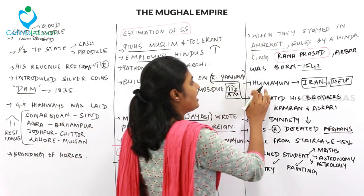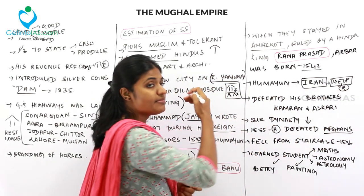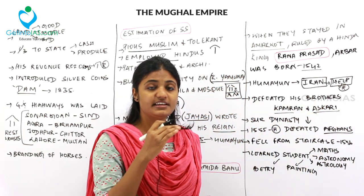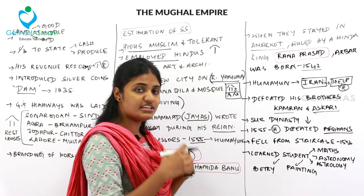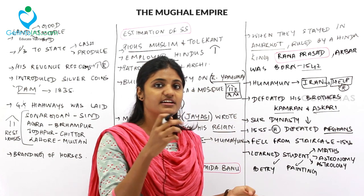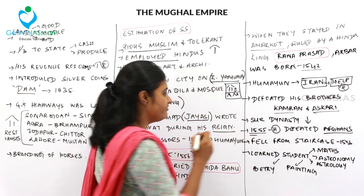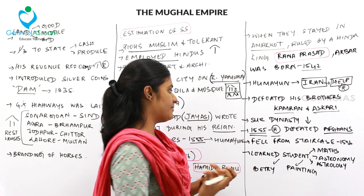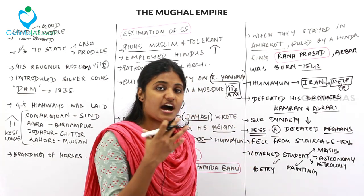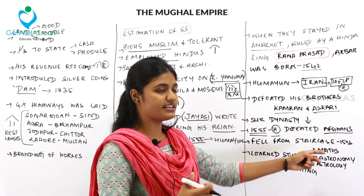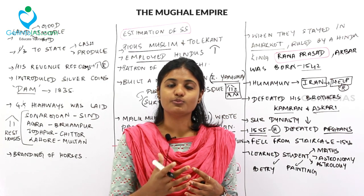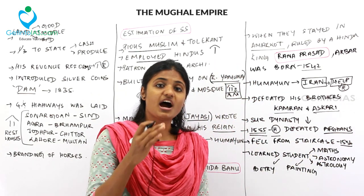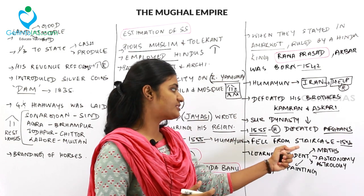Humayun returned from Iran and defeated his brothers Kamran and Askari, who had refused to help him against Sher Shah. By then, Sher Shah had died and the Sur dynasty was in decline. In 1555, Humayun defeated the Afghans and recaptured the kingdom. However, he fell from a staircase in his newly built library and died in 1556. That is why he is called 'unfortunate' — after recapturing the kingdom after 15 years, he died within six months.